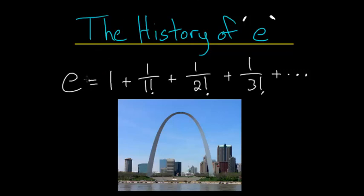So you can see here, I have an equation that e is defined by, and in a later video I'll show you exactly how to derive this equation. But e is equal to 1 plus 1 over 1 factorial plus 1 over 2 factorial, and so on, where for instance 3 factorial is equal to 3 multiplied by 2 multiplied by 1.